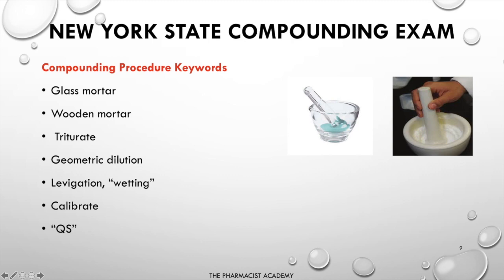Additional keywords include 'geometric dilution,' which refers to mixing two powders together. 'Levigation' or 'wetting' refers to adding a small amount of the suspending agent to the powder in the mortar to wet it — you wouldn't just pour everything into a bottle; you want to cover the powder with a little suspending agent first. I typically use 'levigation' when compounding ointments, but the concept is the same: you're placing the suspending or wetting agent on top of the powder before continuing the compounding process.